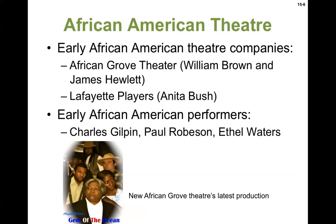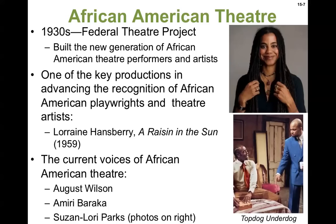Early African-American theater companies include the African Grove Theater and the Lafayette Players. The new African Grove Theater's latest production is August Wilson's Gem of the Ocean. The Federal Theater Project in the 1930s helped build the new generation of African-American theater performers and artists. And of course Lorraine Hansberry — one of the key playwrights — wrote A Raisin in the Sun in 1959, a very tumultuous time, writing about issues that were very important.